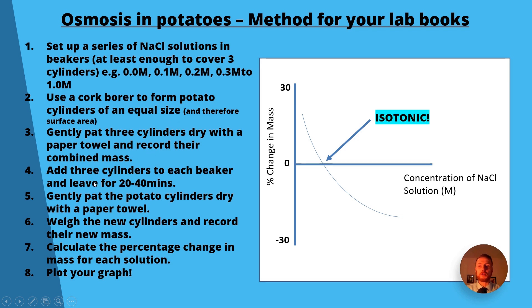You add them to the beakers or the test tubes or the boiling tubes you've set up with your serial dilution in there for 20 to 40 minutes. Gently pat them dry again after this time period, weigh them again, record the new mass, calculate the percentage change, and then plot your graph. Now when you're calculating the percentage change, what you will do is you will do the change in mass divided by the original mass times by a hundred.